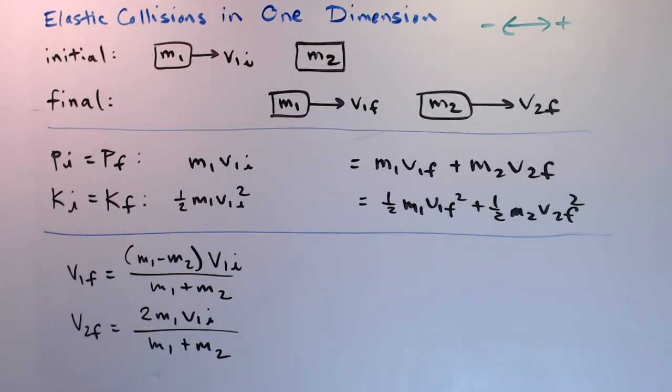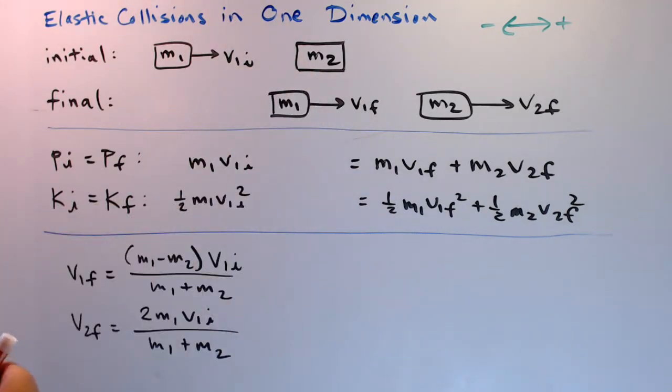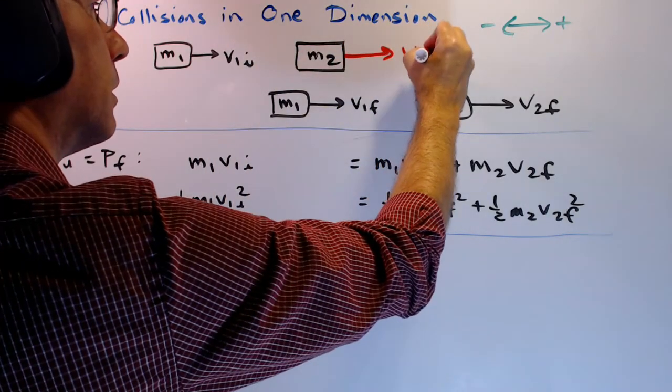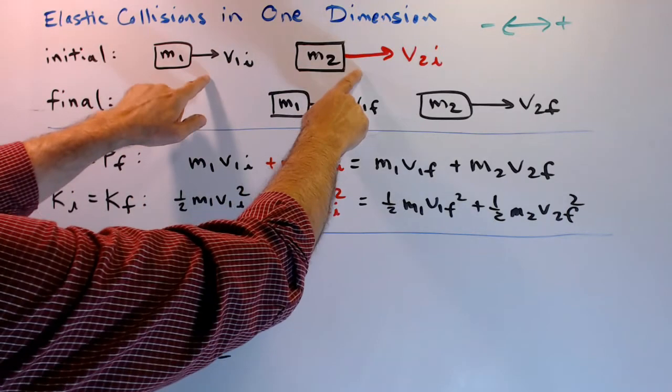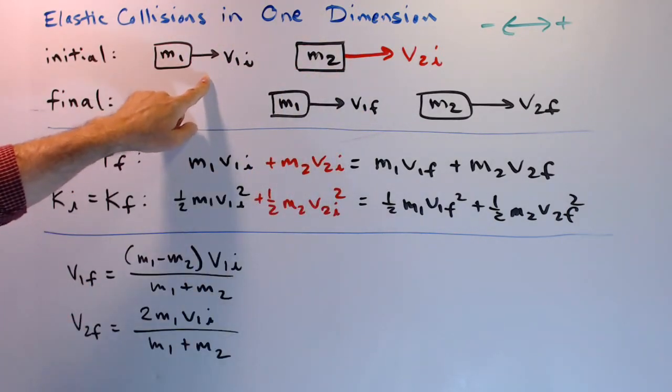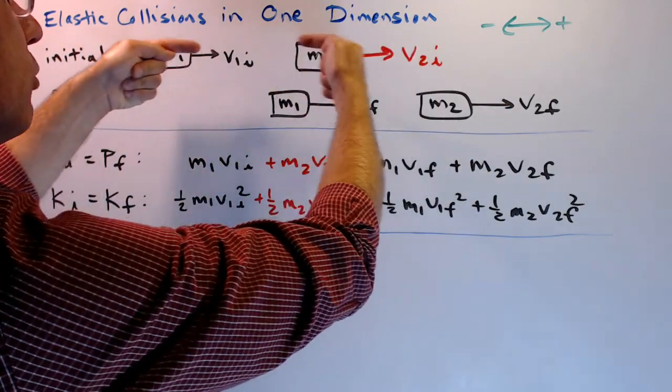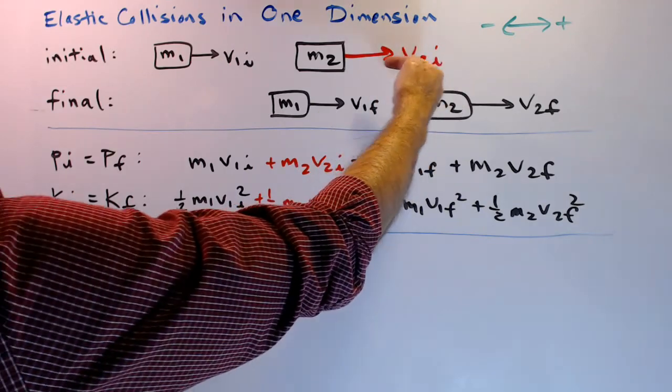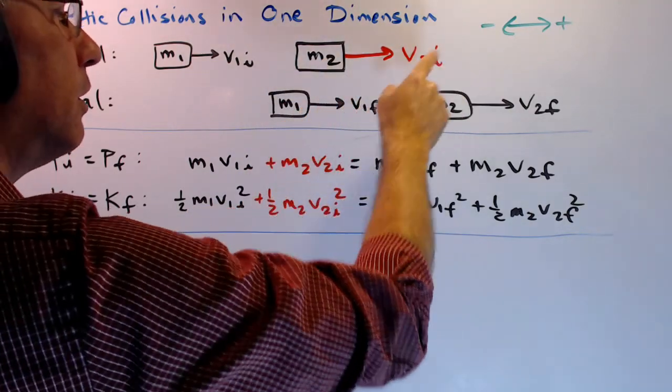As I said before, this is a special case. m2 does not have to be initially at rest. What if it's moving? Like this. If that's the case, we have to add some more terms to these equations here. Now you might wonder, how could a collision occur if mass two is actually moving away from mass one? Well, if v1 initial is greater than v2 initial, m1 will catch up to m2 and there will be a collision. More typically though, you're going to have both of them coming toward each other. If mass two is initially moving to the left, then v2 initial will necessarily be negative, and if it happens to be pointing to the right, then it will be positive.